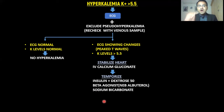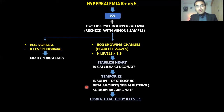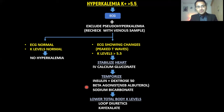The steps above lower serum potassium acutely by shifting it from the serum into the cells, but total body potassium is still high. You must eliminate potassium from the body entirely. This can be done in two ways: loop diuretics cause loss of potassium in the urine, while K-exalate (a resin) binds potassium and causes its loss in the stools.